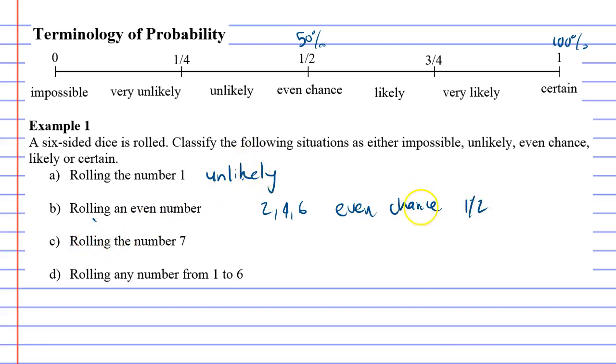Rolling the number 7. There is no 7 on a dice, so this one's impossible, or you could say a zero chance.